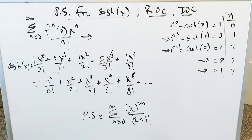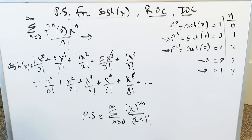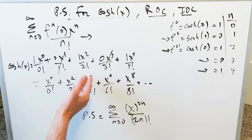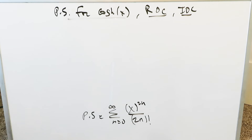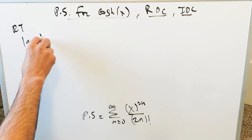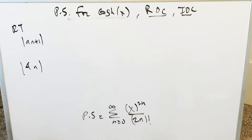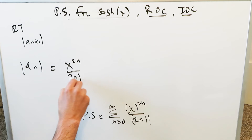Now we look at the radius of convergence and the interval of convergence. This series is exactly like the hyperbolic sine — everything is positive, but the items are shifted down by one in numerical value: instead of 1, 3, 5 you see 0, 2, 4, 6. We evaluate this using the ratio test: the absolute value of a_{n+1} divided by a_n, where a_n is x to the power of 2n divided by (2n) factorial.